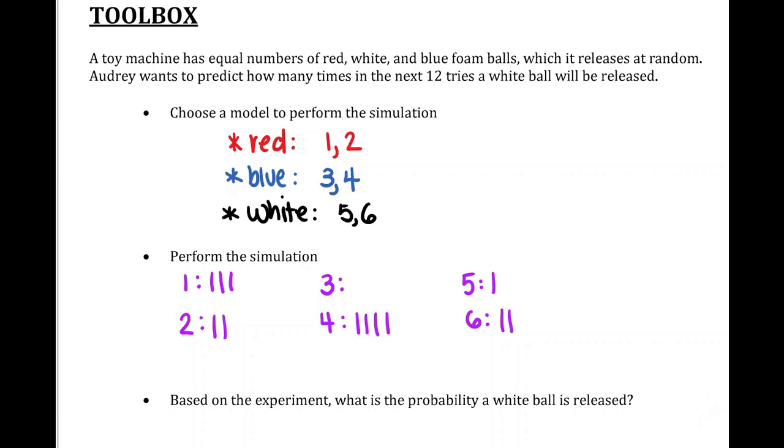Based on the experiment, what is the probability a white ball is released? Well, for me, a white foam ball was represented by the numbers five and six on my number cube. That landed three times out of the twelve, or one-fourth.